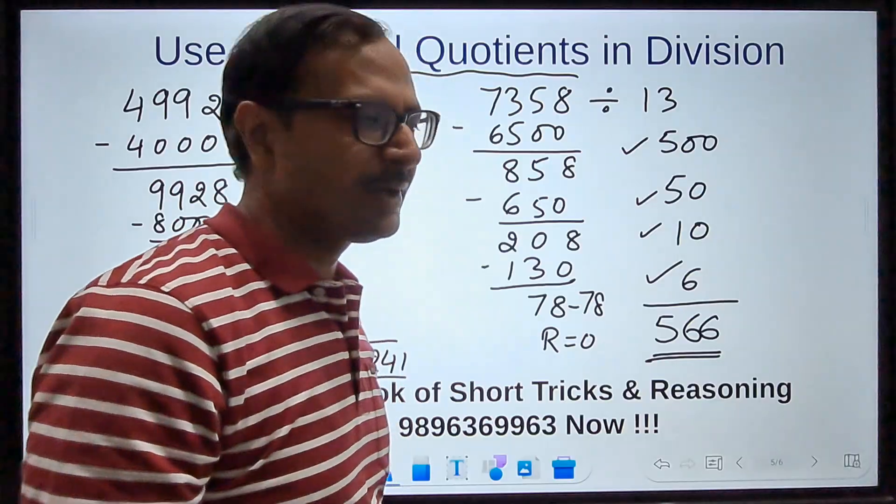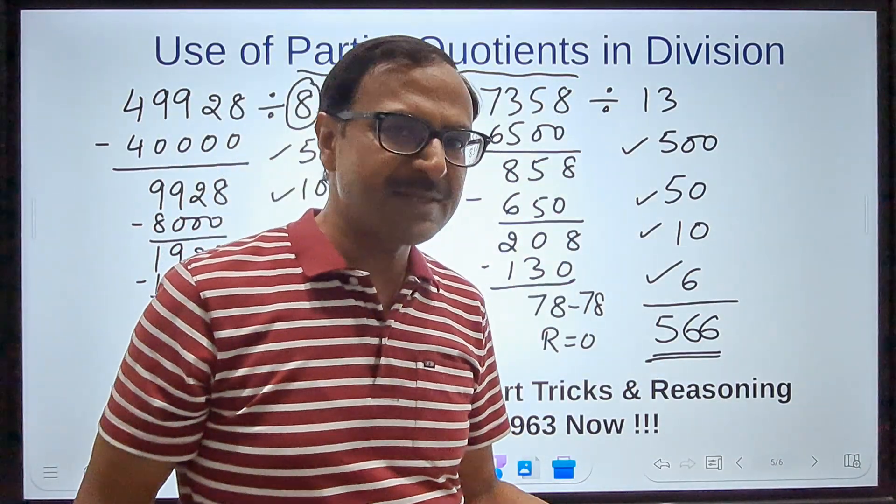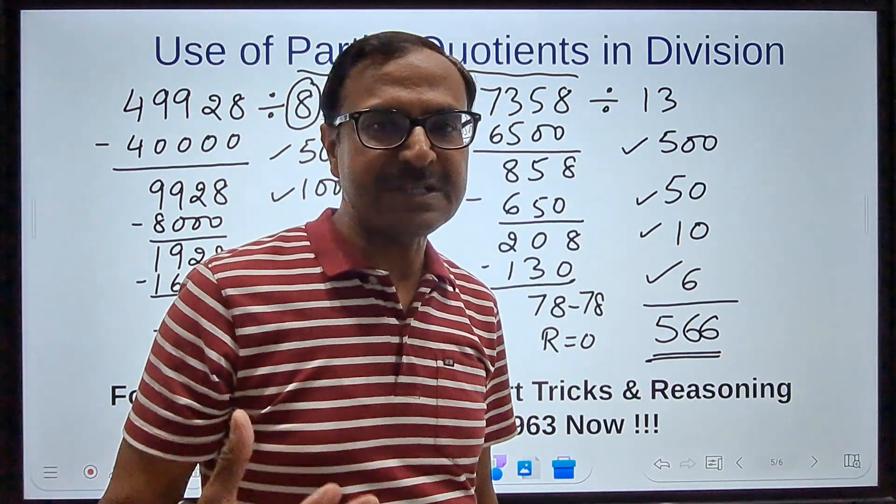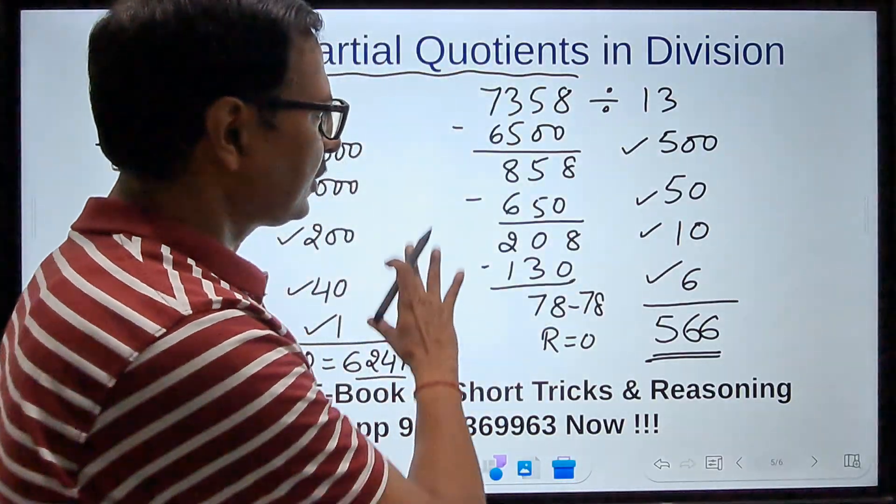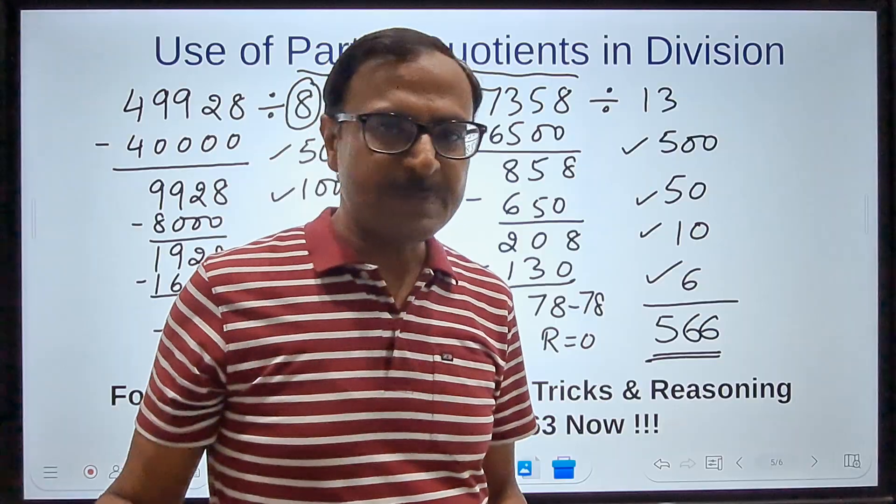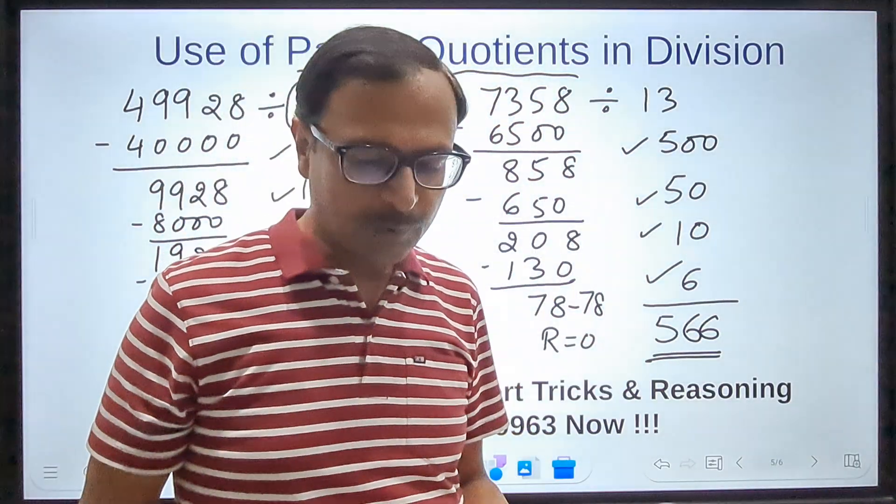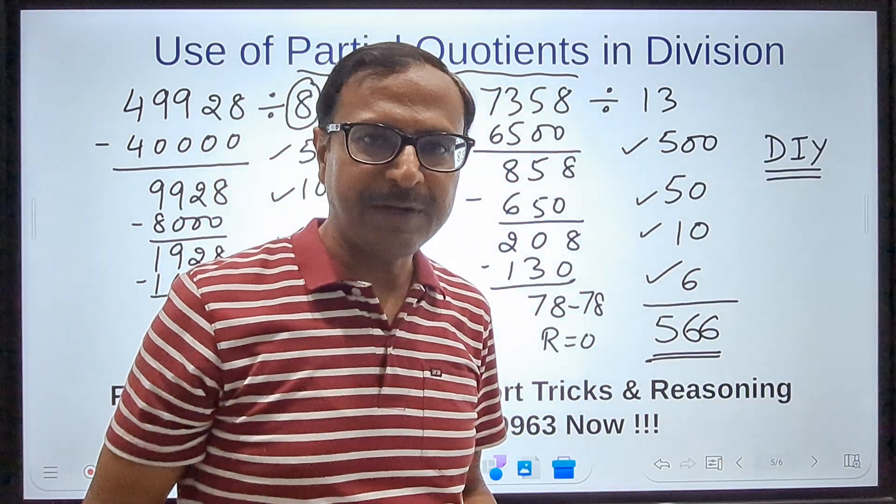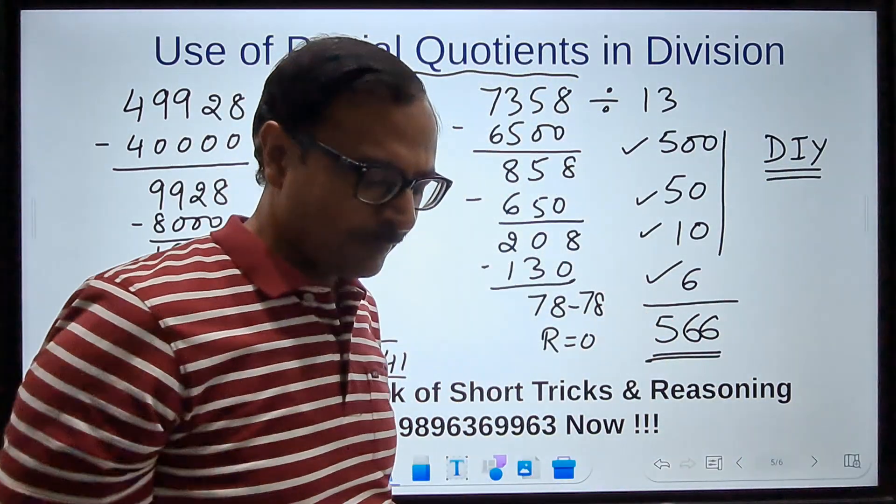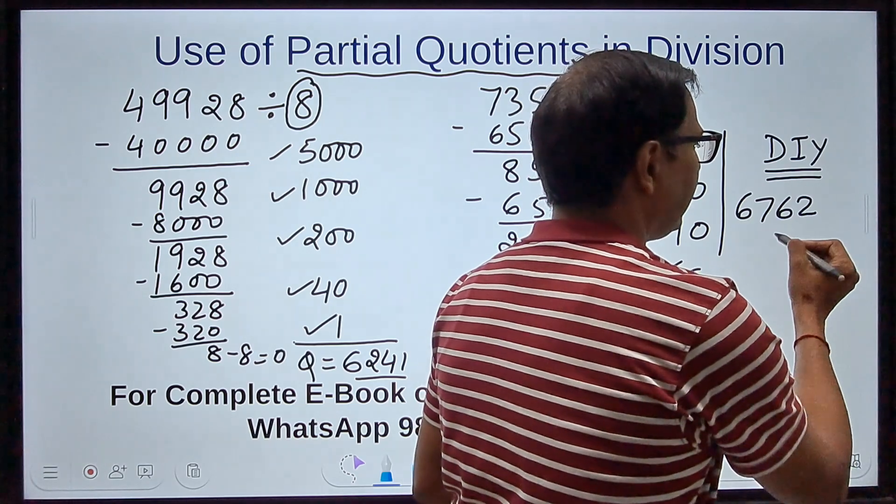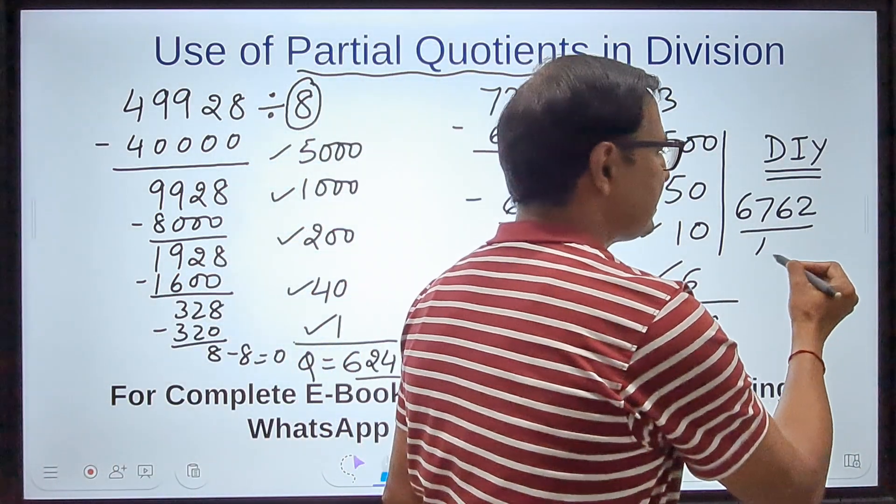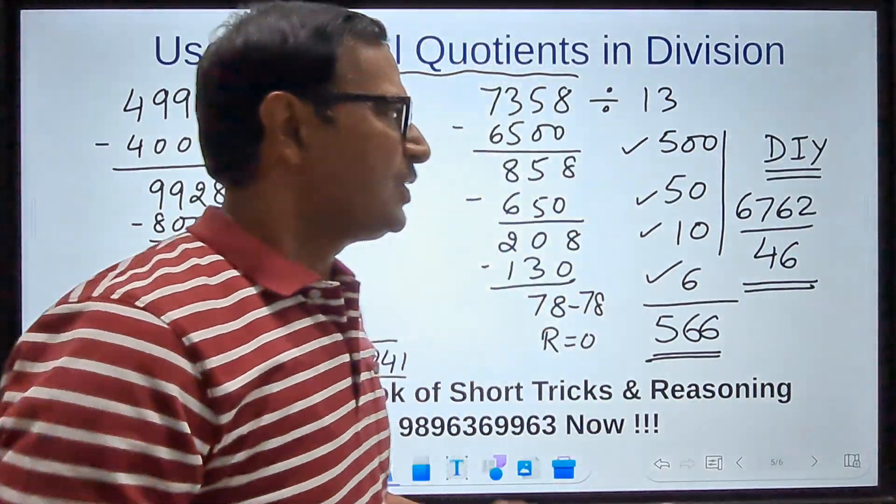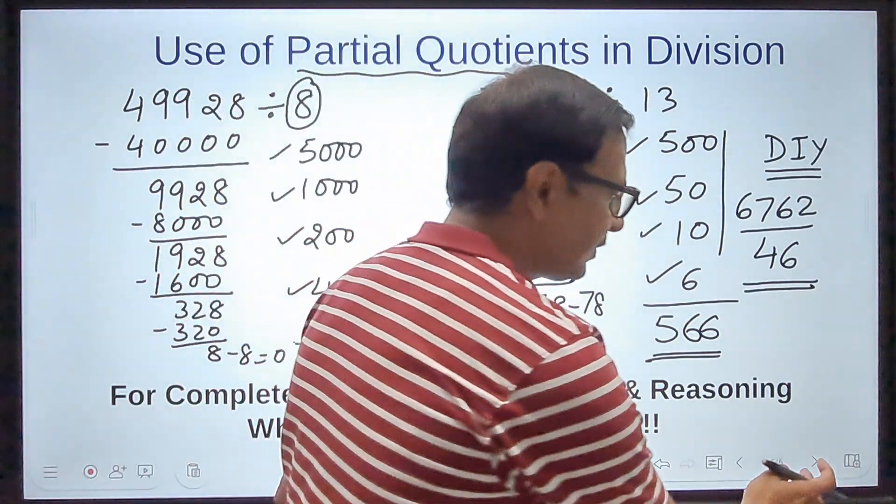Friends, you can just practice this partial products and partial quotients—it's a wonderful concept in mathematics. If you practice this, your calculation speed is going to improve and you are not going to rely on pen and paper for these basic calculations. For this partial quotients method, I'm going to give you a DIY. You can solve this question also and comment whether you could solve it correctly and how much time you took to crack the question. You have to do 6762 and divide that by the number 46. Get me the quotient and tell me in the comments if it worked for you.